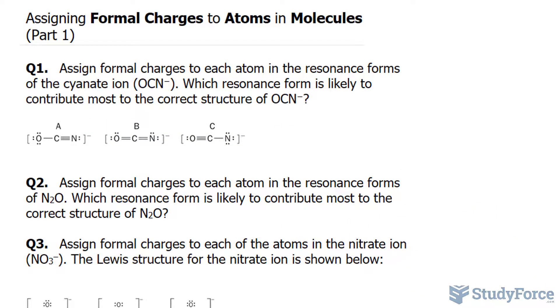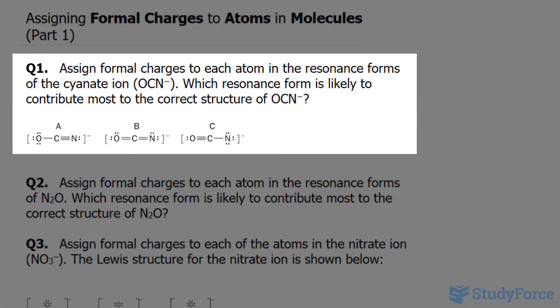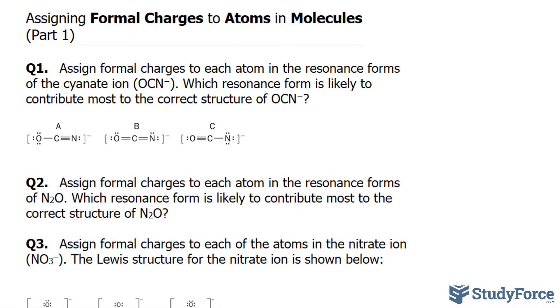In this lesson, I'll show you how to assign formal charges to atoms in molecules. The question reads: assign formal charges to each atom in the resonance forms of the cyanate ion, represented as OCN negative. Which resonance form is likely to contribute most to the correct structure of OCN negative?